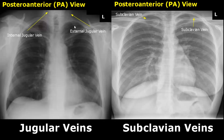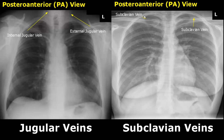This is the location. The course of the subclavian veins will be behind the clavicle on both sides on x-ray. The subclavian artery is also in this region.